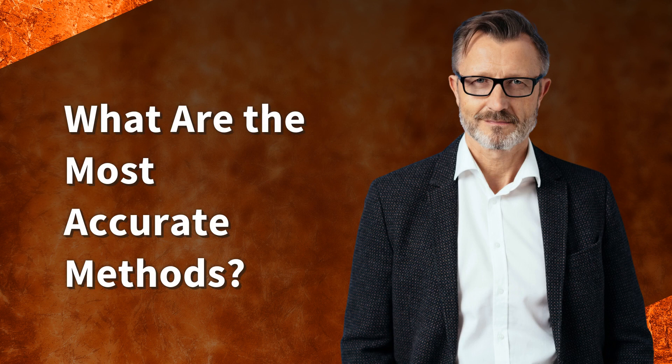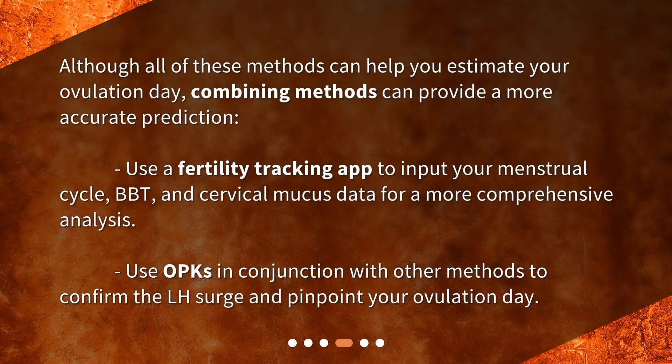What are the most accurate methods? Although all of these methods can help you estimate your ovulation day, combining methods can provide a more accurate prediction. Use a fertility tracking app to input your menstrual cycle, BBT, and cervical mucus data for a more comprehensive analysis. Use OPKs in conjunction with other methods to confirm the LH surge and pinpoint your ovulation day.